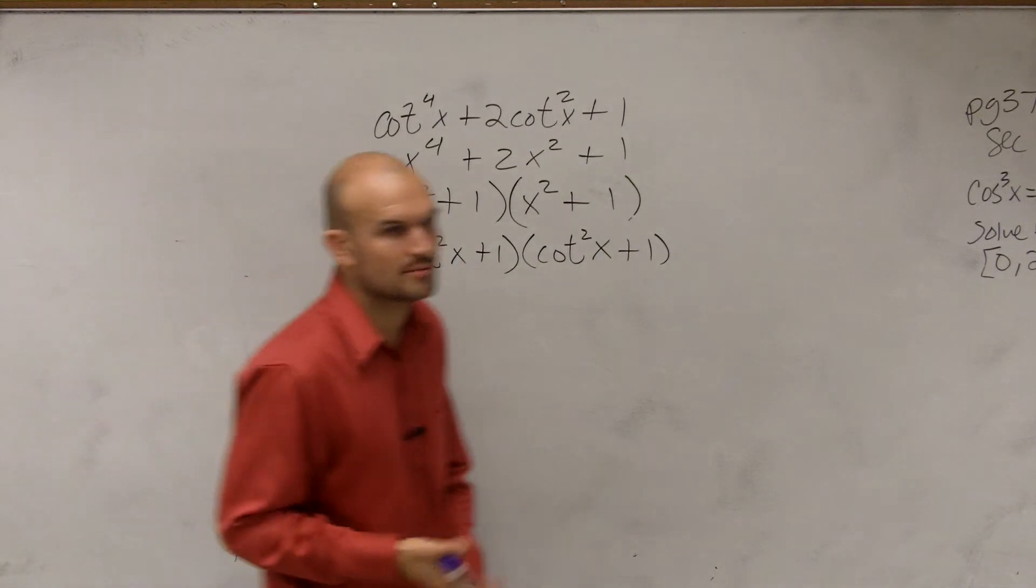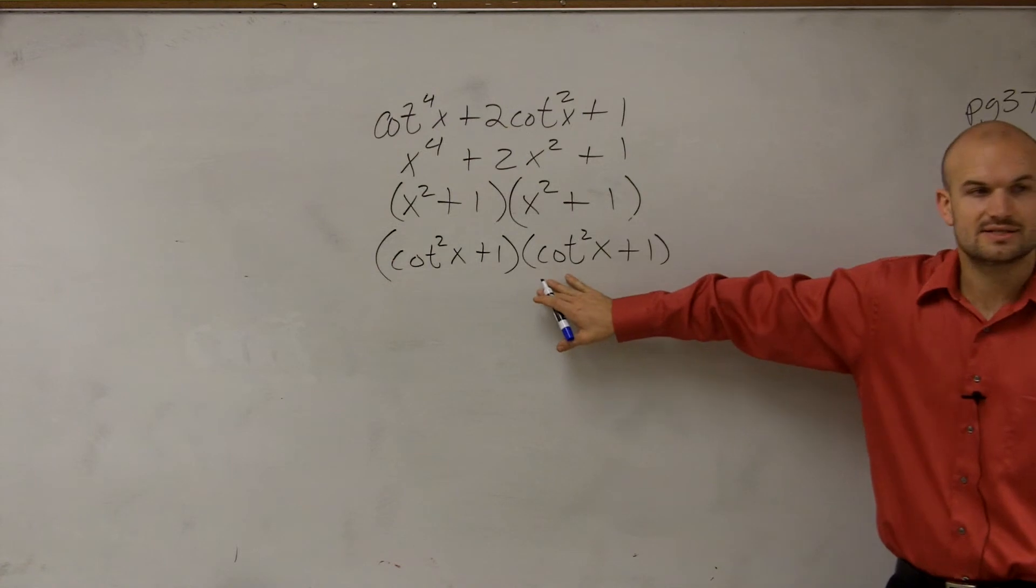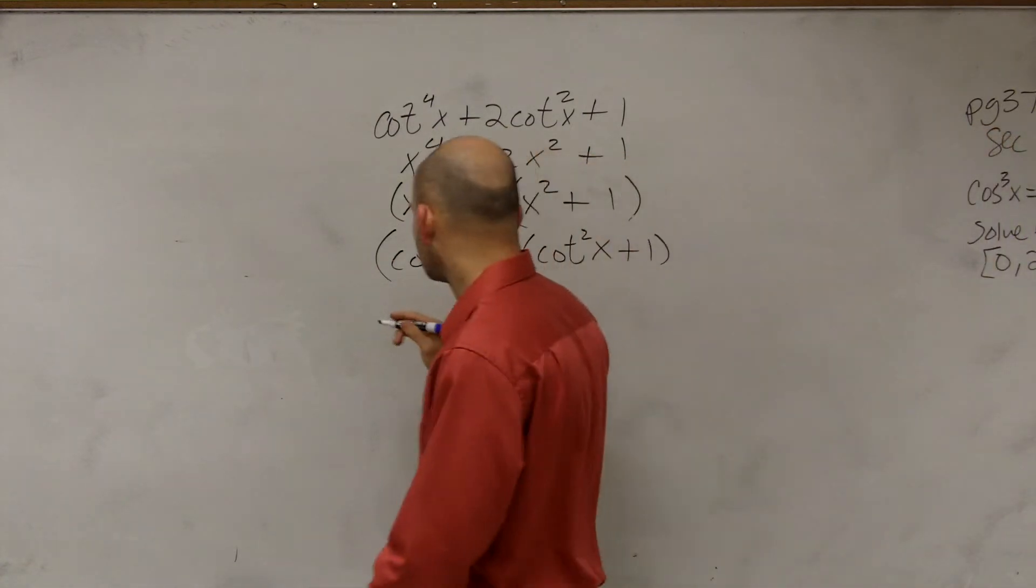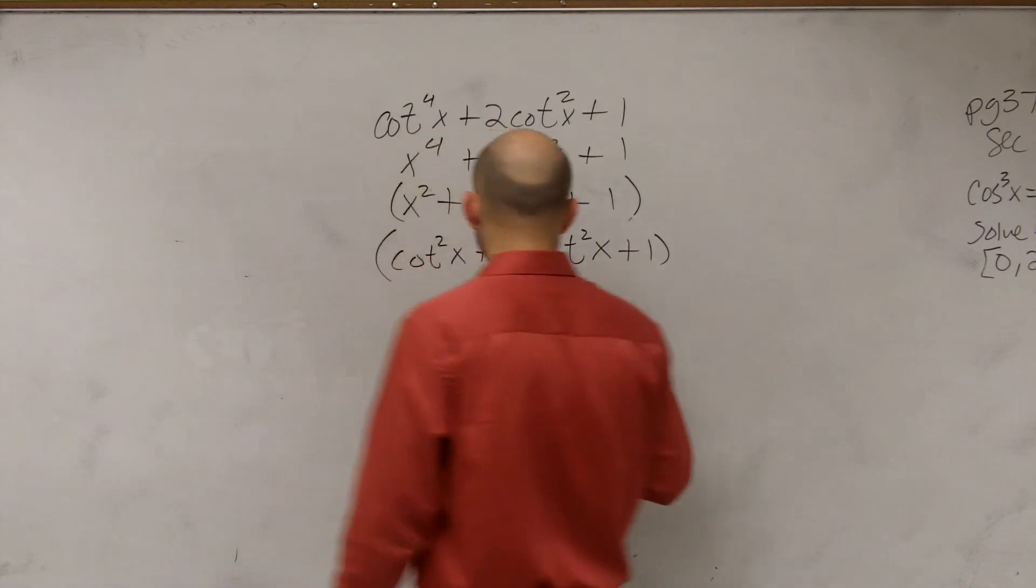So in reality, I'm just working with easier problems without the cotangent so you guys can see the factoring problem. And then you guys can see this, which ends up being cotangent squared of x plus 1 squared.